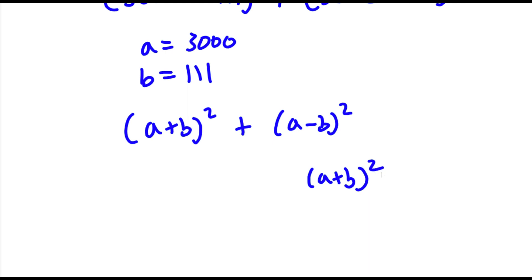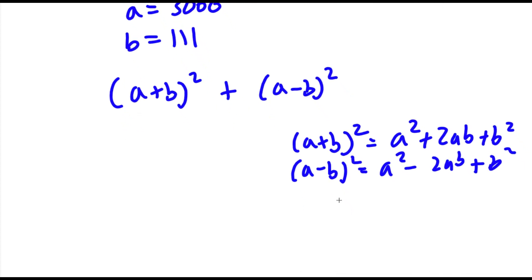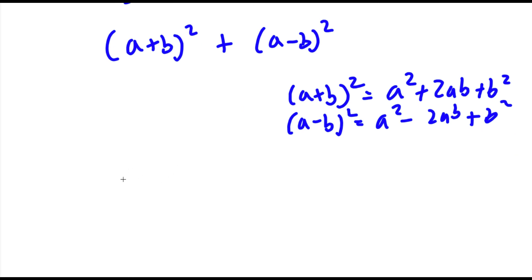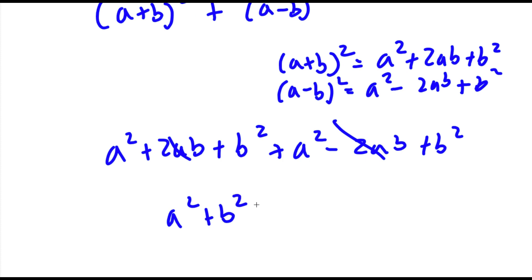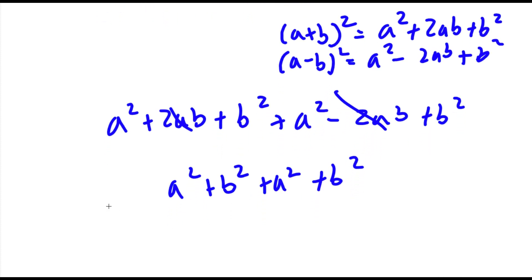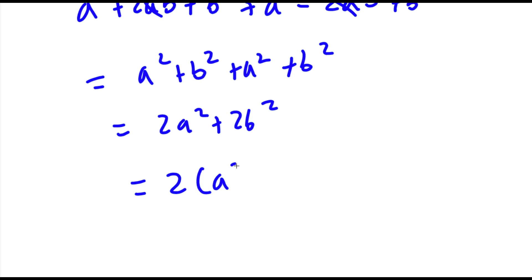Now A plus B squared is equal to A squared plus 2AB plus B squared. And A minus B squared is equal to A squared minus 2AB plus B squared. So if I add these two together, I get A squared plus 2AB plus B squared plus A squared minus 2AB plus B squared. The 2AB terms cancel out, and I'm left with 2A squared plus 2B squared, which factors to 2 times A squared plus B squared.